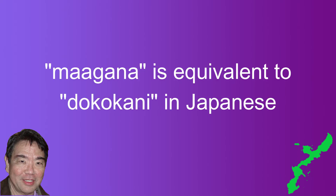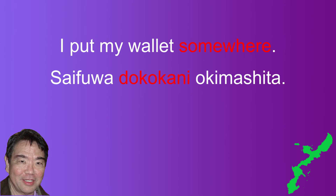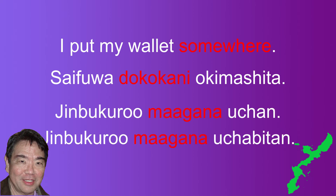The next example is "ma" used with the sentence particle "gana," which means "some." "Ma gana" means "somewhere," equivalent to Japanese "doko kani." The example is "I put my wallet somewhere." In Japanese: "saifu wa doko kani okimashita." In Uchinaguchi: "jimbukuro ma gana uchang" in casual form and "jimbukuro ma gana uchabitan" in polite form.